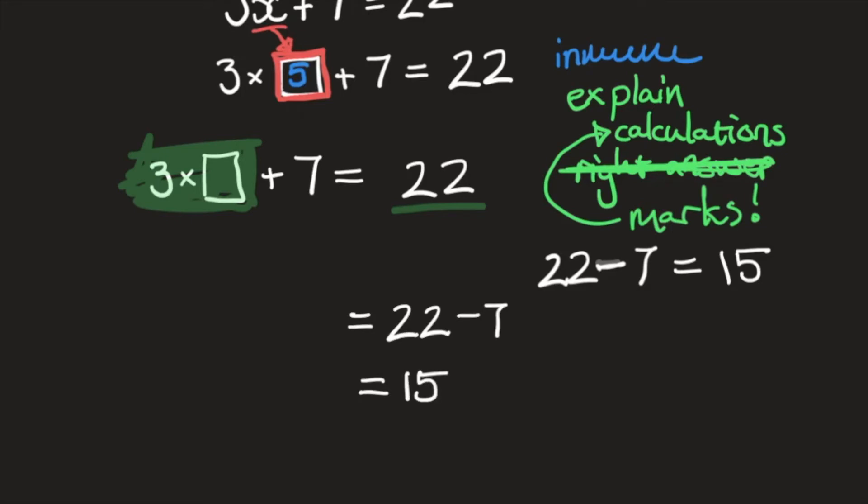So, they know they've had to do 22, subtract 7, gives them an answer of 15. Then, once they've done that, they figure out that they need to figure out what that is. And to do that, they're going to have to get rid of that 3.